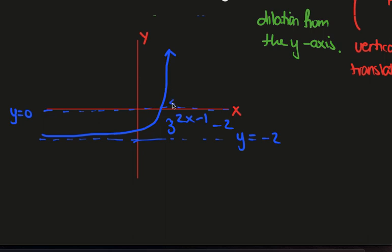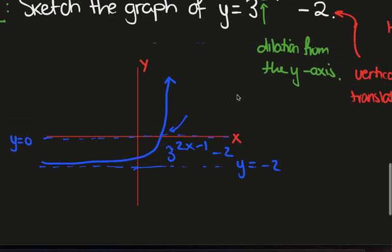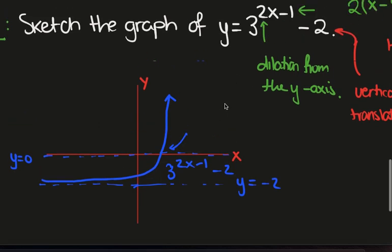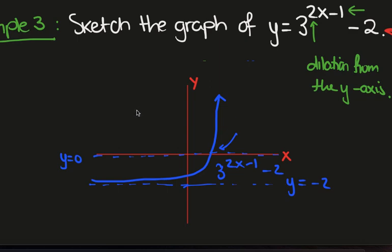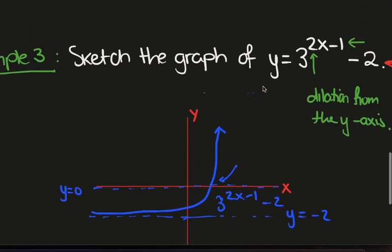And this is roughly the sketch that we'll get. Now we would need to calculate this x-intercept here. And we can do that by setting y equal to 0, but we would still need logarithms. So I'll cover logarithms in the next video. And after we understand logarithms, we can begin to calculate these x and y intercepts for these graphs.